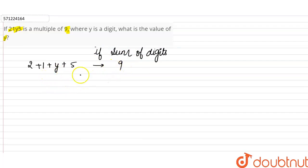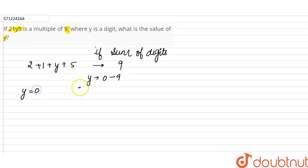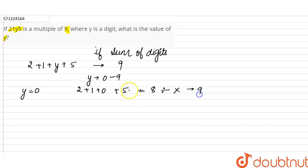We have to take different values of y from 0 to 9 to check whether the sum of digits is divisible by 9 or not. Firstly, when y is equal to 0: 2 plus 1 plus 0 plus 5 equals 8. Since 8 is not divisible by 9, 0 cannot be the value of y.